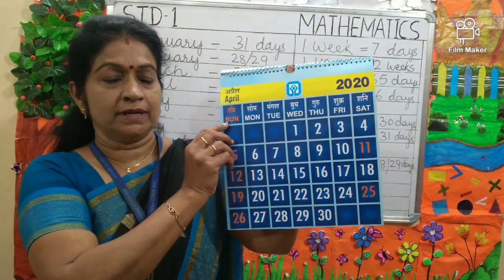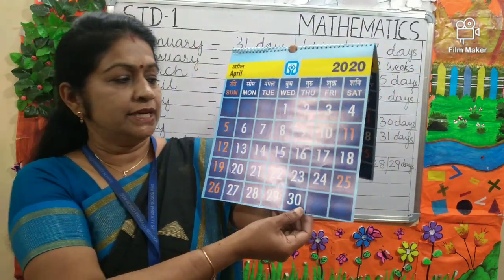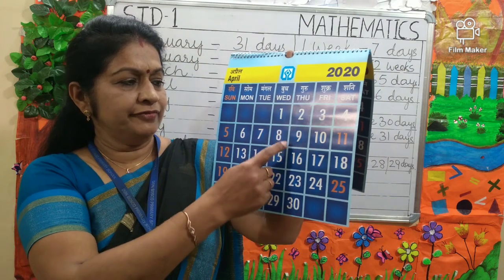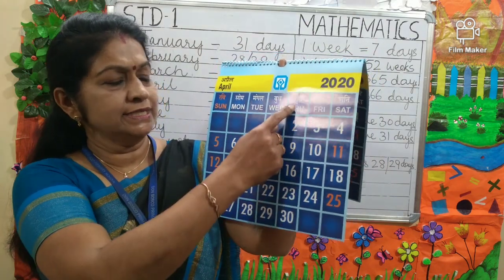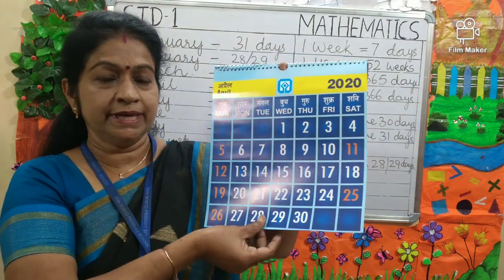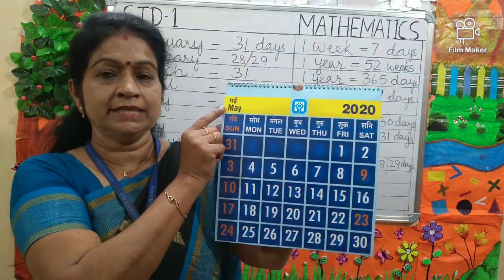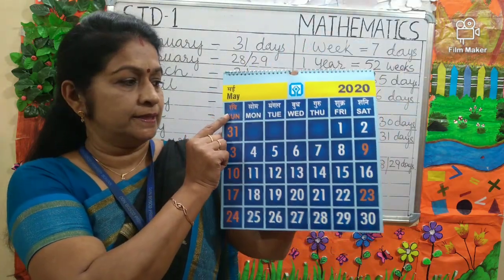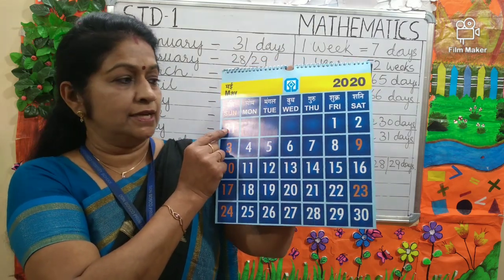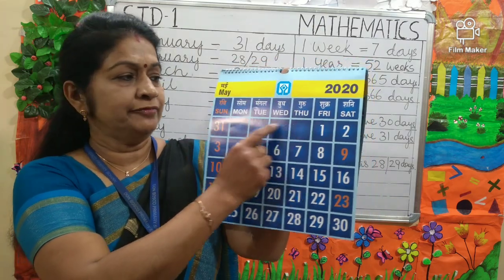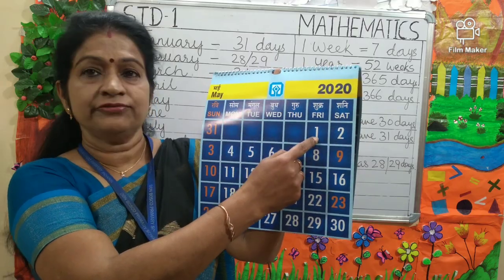Next is April. April has 30 days. Can you tell me which day is 9th April? It is Thursday. Next is May. May is the fifth month of the year and it has 31 days. Can you tell me which day is 31st July? It is Friday.